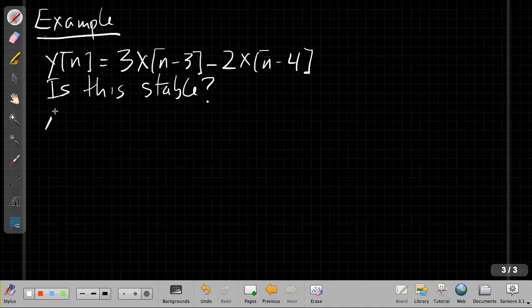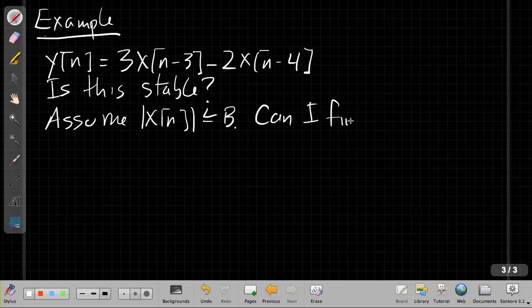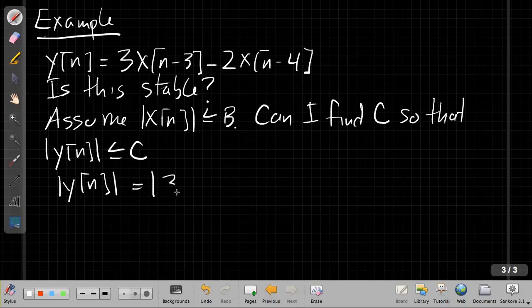We start from the same place. We assume the input is bounded. So we say, if you tell me, assuming it's bounded here, so we're saying if the input is a bounded input, but I don't know anything else about it. We're asking, can I find capital C so that y[n] is less than or equal to that C? That's just straight from the definition, and I'd like to find this in terms of B. So let's start. I'm trying to find a bound on y[n]. Let's start with that. So I know the magnitude of y[n] is going to be the magnitude of this whole equation. So 3x[n-3] minus 2x[n-4].